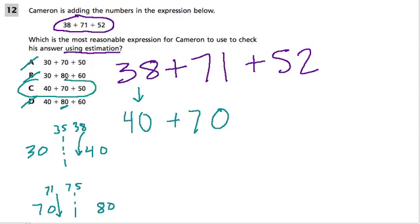But I always like to make sure if I have time, and this makes sense. They rounded the last number to 50, and that makes sense because 52 is between 50 and 60, but it's much closer to 50. So I'd round it down to 50.